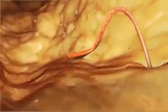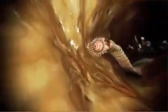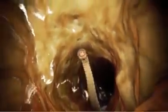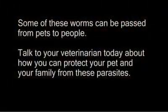Roundworms can cause vomiting, enteritis, tissue scarring, and pulmonary disease. Whipworm infection can result in bloody diarrhea, weight loss, dehydration, anemia, and in severe cases even death. Tapeworms attach to the intestine but rarely cause significant problems unless there are a lot of them. The egg packets can be very unpleasant to deal with when shed via the anus. Some of these worms can be passed from pets to people.